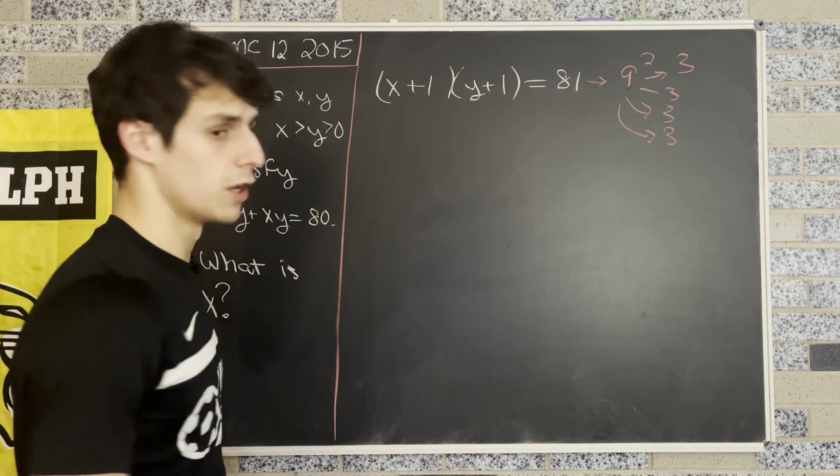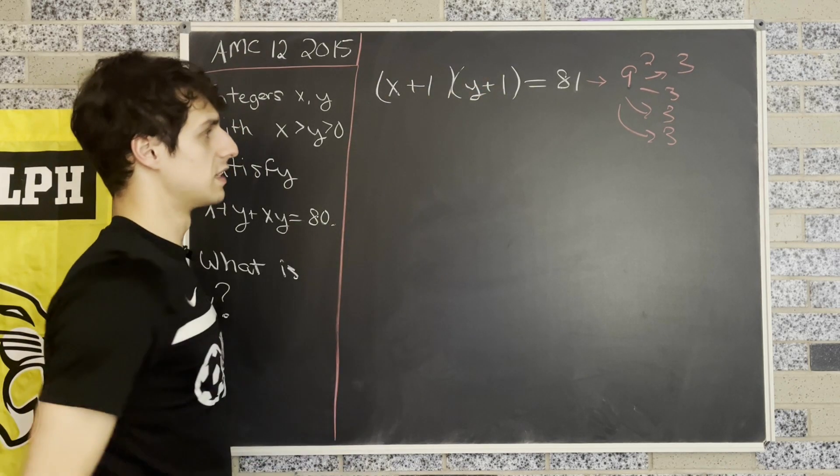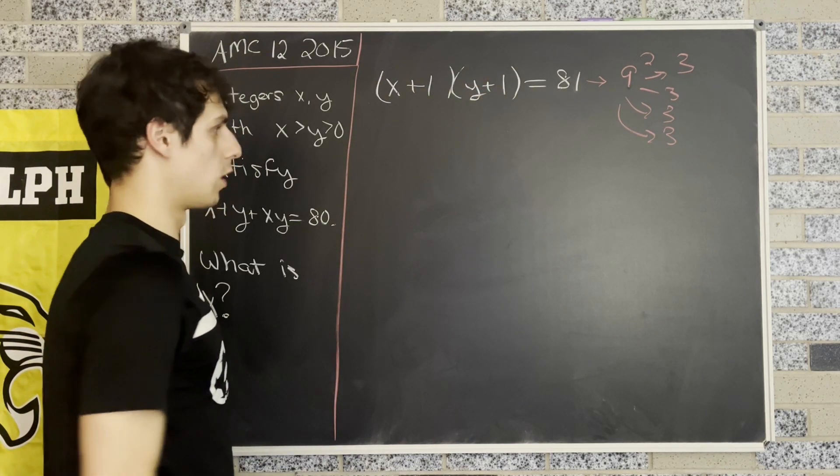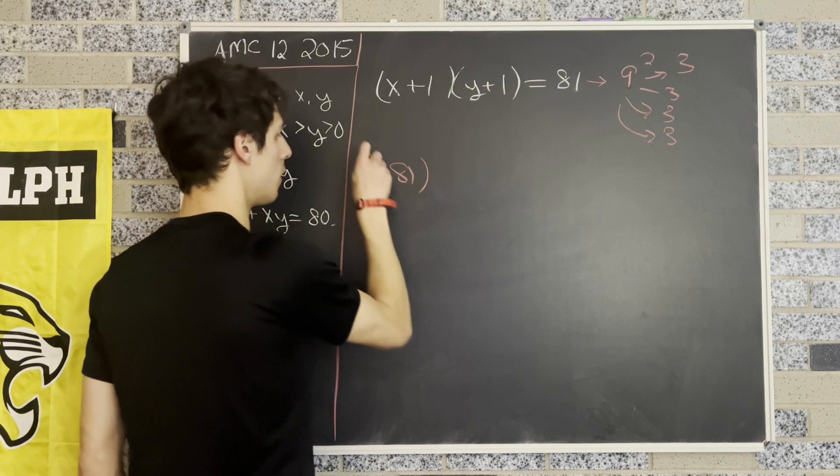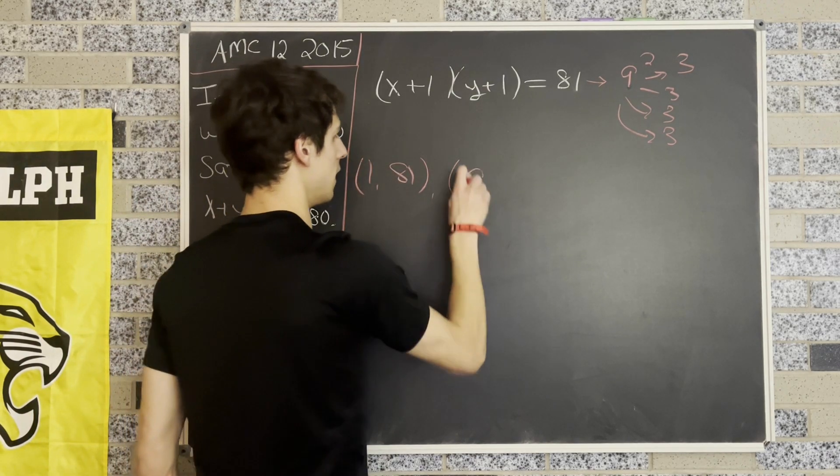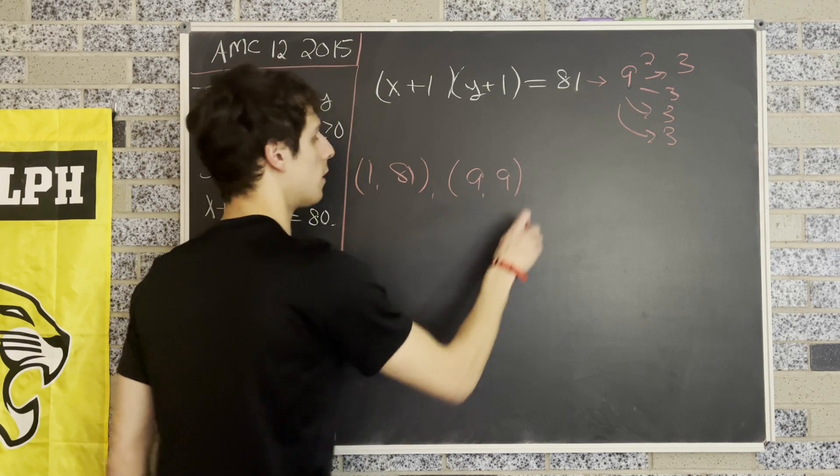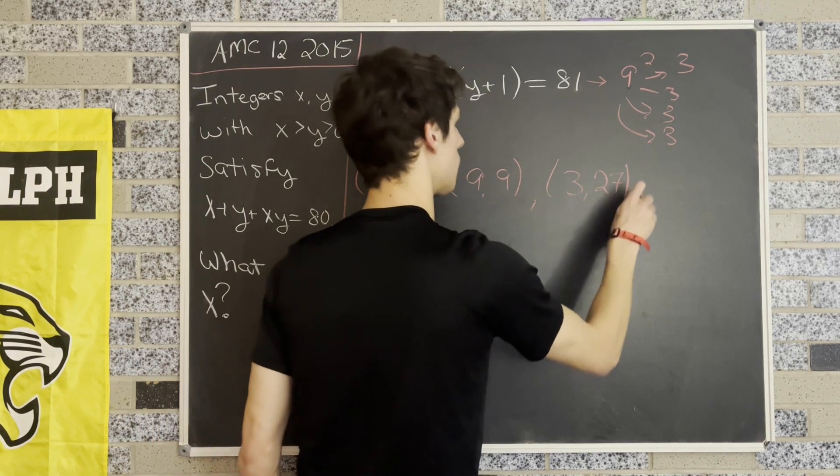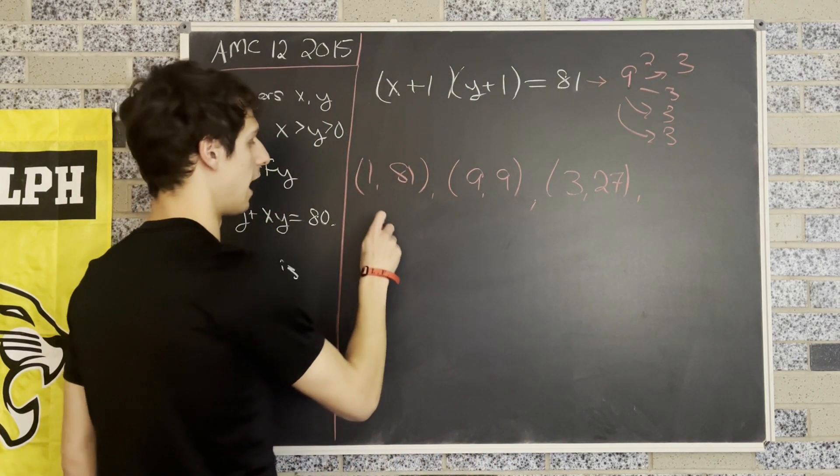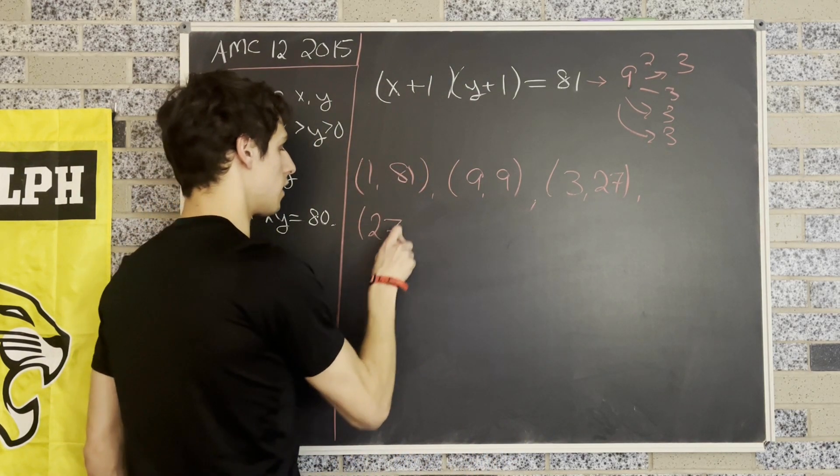Well, that's nice because we know that there's only a certain amount of solutions that solves this equation here for x and y. We know that our ordered pairs could be 1, 81. We know that we could have 9, 9. We know that we could have 3 and 27. We know that we could have 27 and 3. And that we could have 81 and 1.